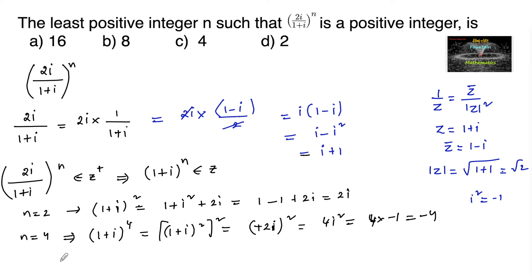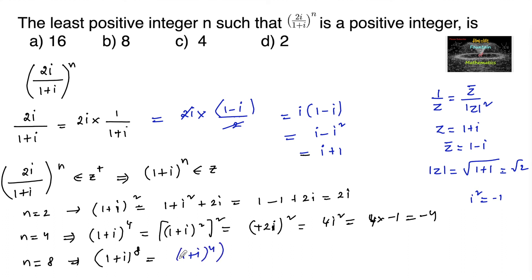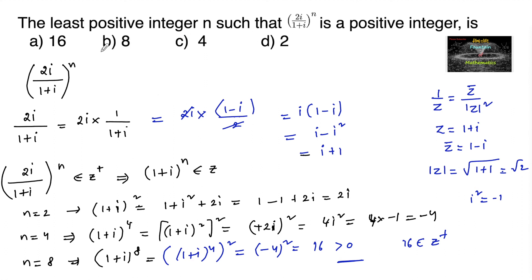Now let us move to n = 8. We have (1+i)^8 = ((1+i)^4)^2 = (−4)^2 = 16, and 16 is a positive integer. Hence, n = 8 is the least positive integer such that (2i/(1+i))^8 = 16, a positive integer.